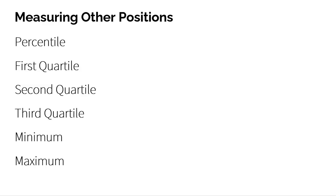Some very common ones you've heard of before are things like min and max. The min is the lowest value, the max is the highest value. That's a specific position in the data — the highest and lowest.